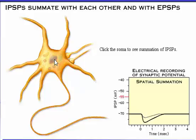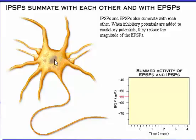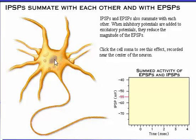Inhibitory postsynaptic potentials and excitatory postsynaptic potentials also summate with each other. When inhibitory potentials are added to excitatory potentials, they reduce the magnitude of the excitatory postsynaptic potentials.